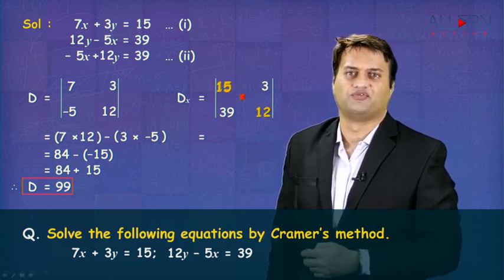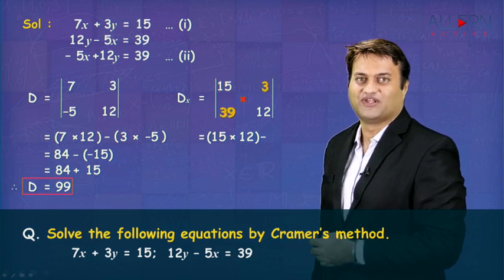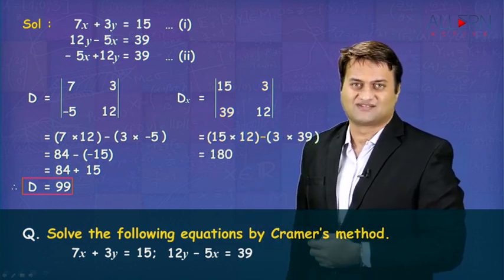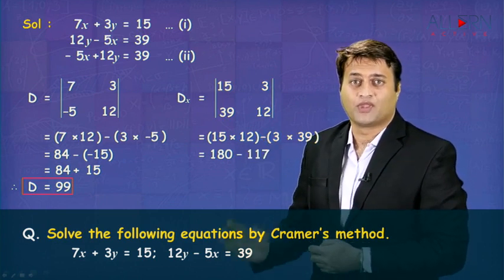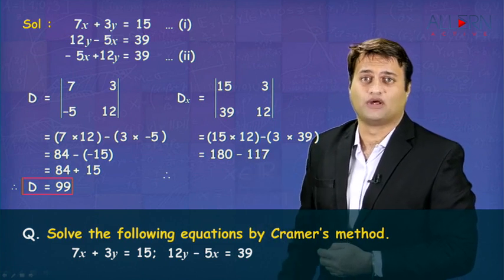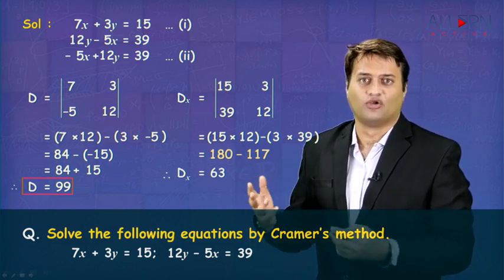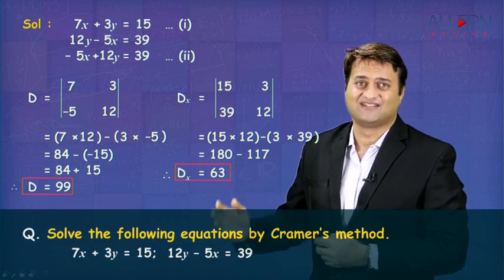Let us cross multiply. It is 15 into 12 minus 39 into 3, which is 180 minus 117. 180 minus 117, you get the value of DX as 63. D is 99, DX is 63.